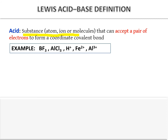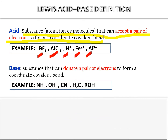According to Lewis, an acid is a substance that can accept a pair of electrons to form a coordinate covalent bond — for example, BF₃, AlCl₃, H⁺, Fe²⁺, and Al³⁺. A base is a substance that can donate a pair of electrons to form a coordinate covalent bond — for example, NH₃, OH⁻, H⁻, CN⁻, H₂O, and ROH.